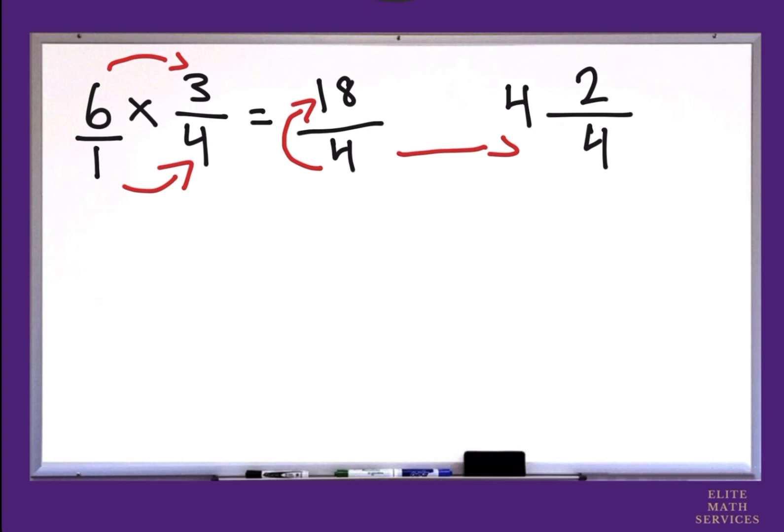We still can simplify from here. 2 and 4 are both even numbers. So we know we can divide even numbers by 2. 2 divided by 2 gives us 1 and 4 divided by 2 gives us 2.